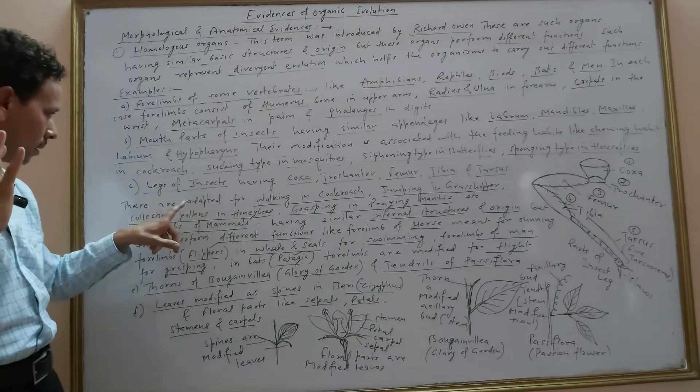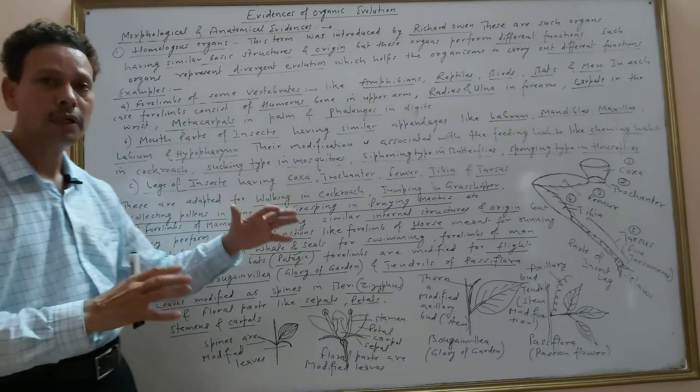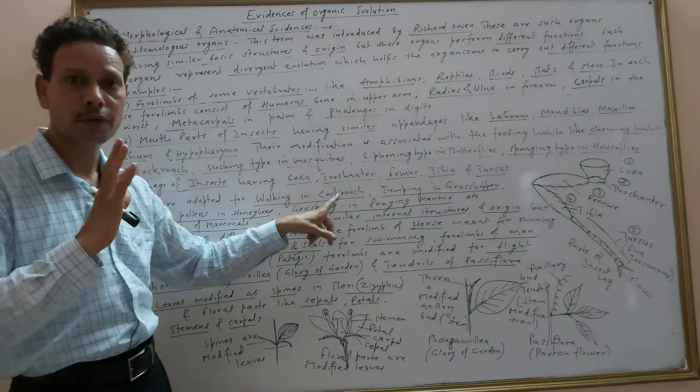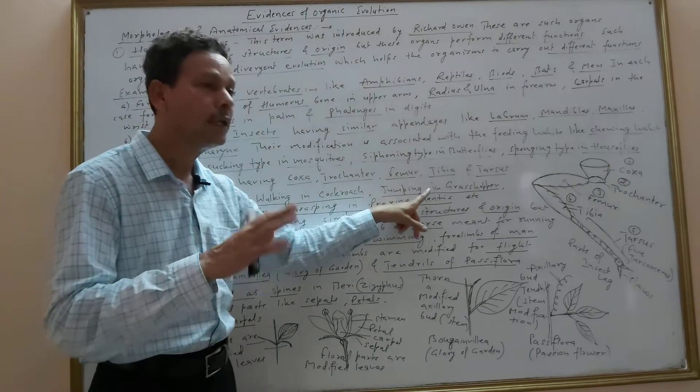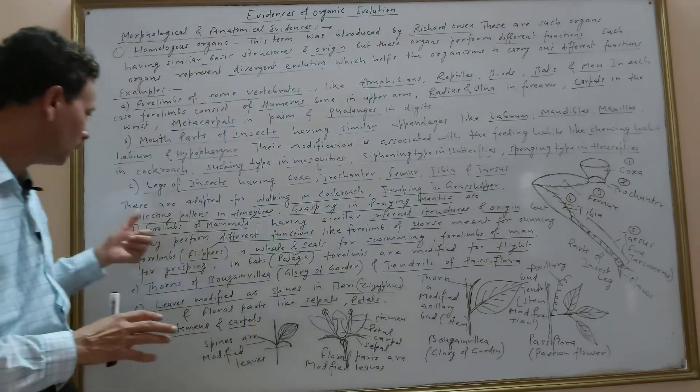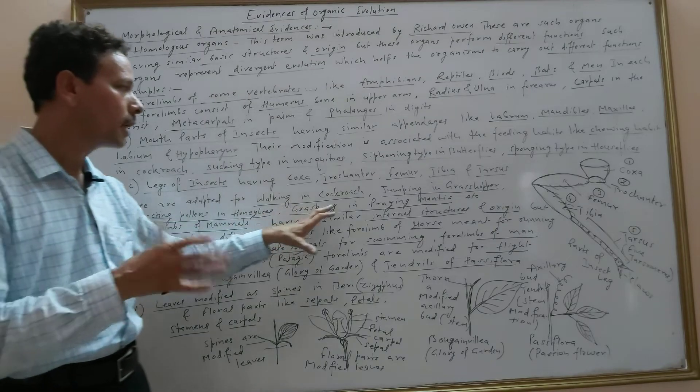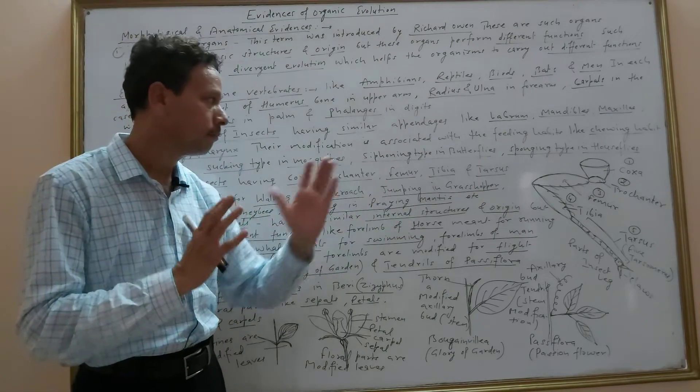These legs are adapted for different functions like walking habit in case of cockroach, jumping type in case of grasshopper, collecting pollens in honeybees, and grasping type in case of praying mantis.